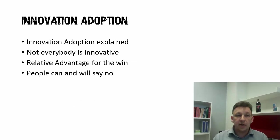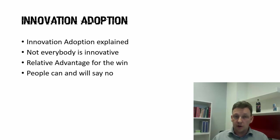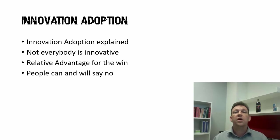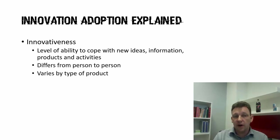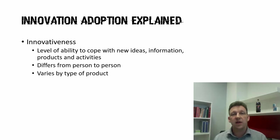A couple of other things you're going to need to be conversant with: innovation adoption theory. Simply because the internet is a long string of new things. If you can cope with innovation adoption theory, you can help people cope with operating on the internet. First thing is innovativeness — you need to understand what it is, what it does.